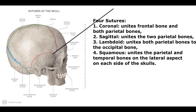Four sutures: 1. Coronal — unites the frontal bone and both parietal bones. 2. Sagittal — unites the two parietal bones. 3. Lambdoid — unites both parietal bones to the occipital bone. 4. Squamous — unites the parietal and temporal bones on the lateral aspect on each side of the skull.